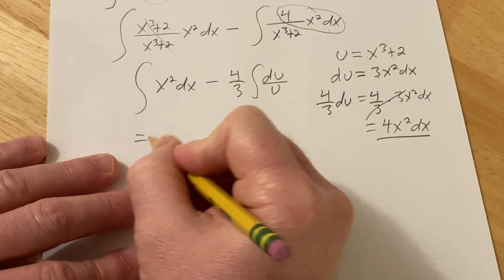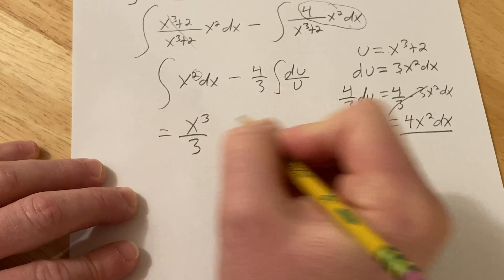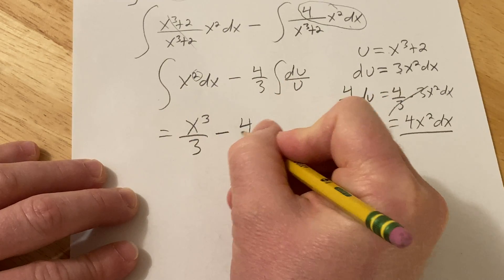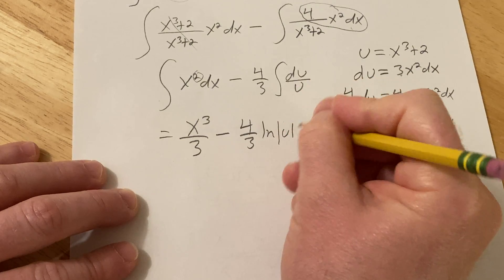So this is power rule on this one. So it'll be x cubed over 3 minus 4 thirds. This is a natural log, absolute value of u.